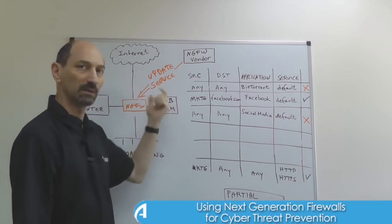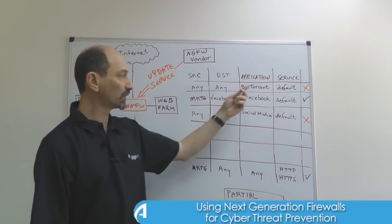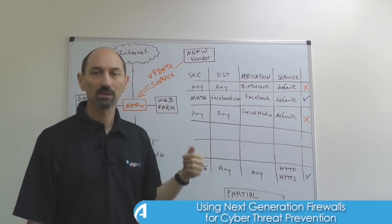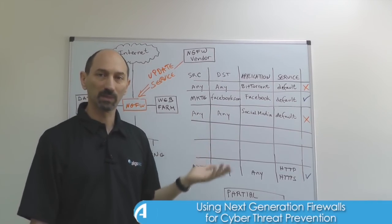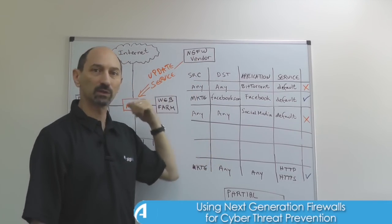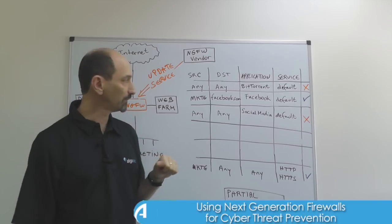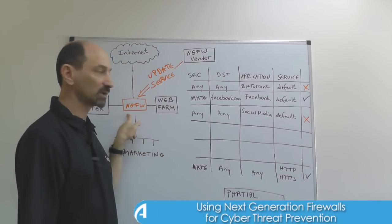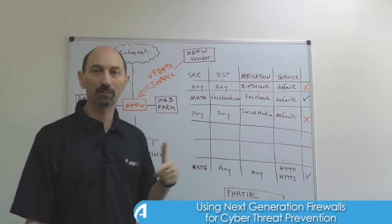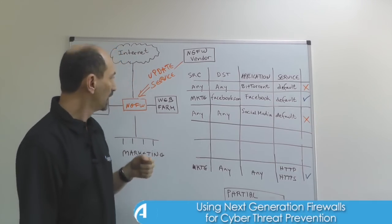Basically, you get signatures and definitions for a great number of applications — especially all the malicious ones — from the firewall vendor that has the expertise to identify them. This means that your next-generation firewall has a continuously updated list of things that you might want to block.